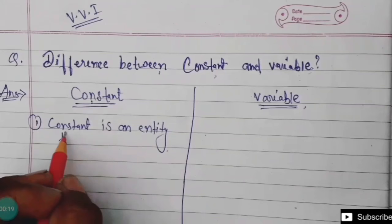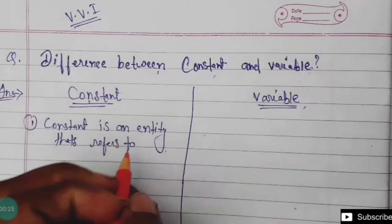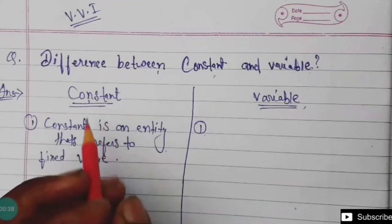Constant is an entity that refers to a fixed value. The value of a constant doesn't change in any situation — that is called a constant.